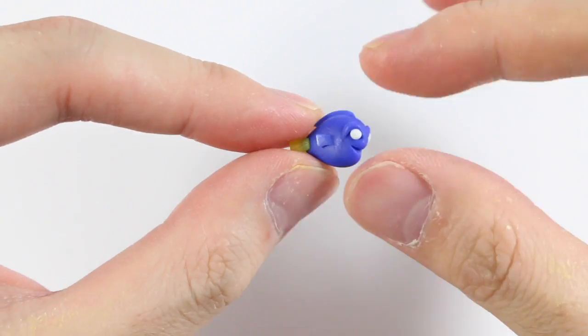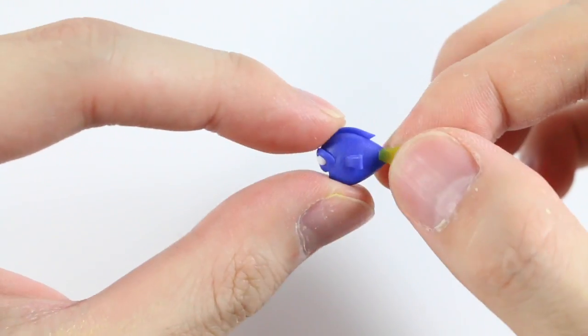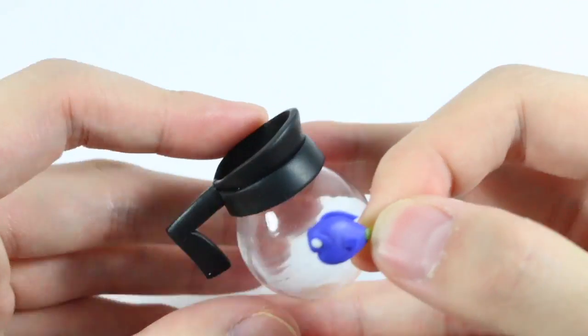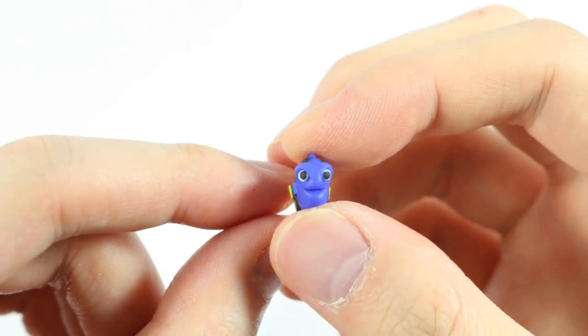Then you want to bake your Dory and your coffee pot according to instructions. Then I just paint on the black details of Dory.